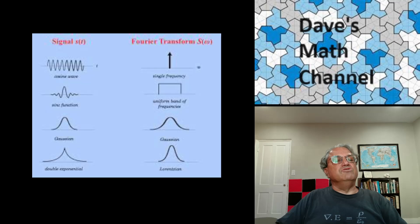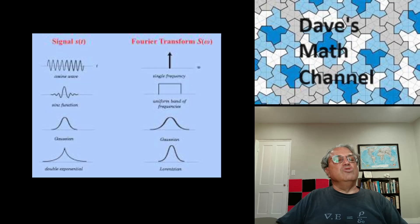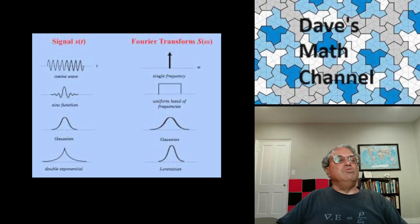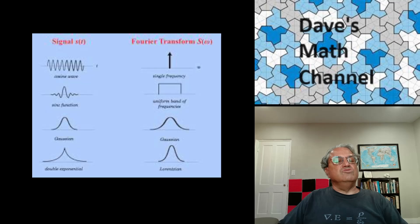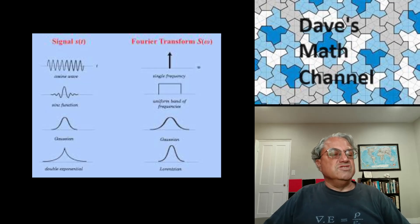Here are a few other examples. The top example is a periodic signal — a pure sine wave — whose Fourier transform is a delta function, so you get one spike, one pure frequency. In the second picture, this is what's called a wave packet, and the Fourier transform of that looks like a step function — a Heaviside step function — giving you a range of frequencies within a band, and nothing outside that range. The Fourier transform of a Gaussian is another Gaussian. And if you have this double exponential — a decaying exponential reflected about the y-axis — its Fourier transform is what's called a Lorentzian, which looks like a Gaussian but with thicker tails. You'll see this one a lot.